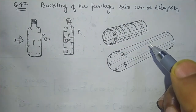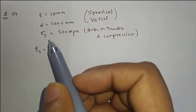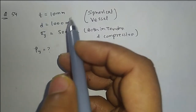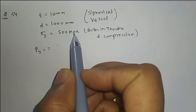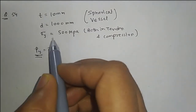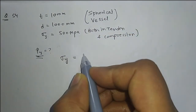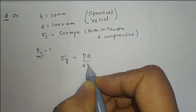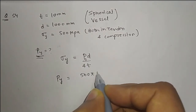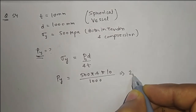Question number 54: A thin-walled spherical vessel with diameter 1000 mm and thickness 10 mm is given. The material yields at a stress of 500 MPa in both tension and compression. The hoop stress due to internal pressure in a spherical vessel is PD/4T. Setting this equal to 500 MPa: P = 500 × 4 × 10 / 1000 = 20 MPa. Option D is the correct answer.